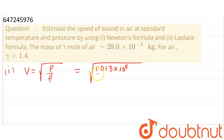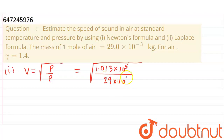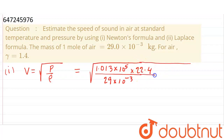Pressure in SI units is obtained. Now for density — density is mass upon volume. The mass of 1 mole of air is given as 29 × 10⁻³ kg. And the volume of 1 mole of air is 22.4 liters. So we go into mass upon volume. Mass is 29 × 10⁻³ kg, and volume is 22.4 liters, but we need to convert it to meter cube for SI units.